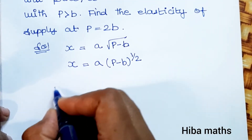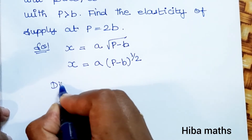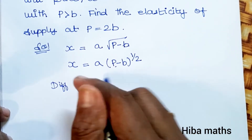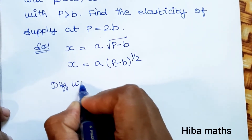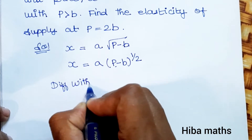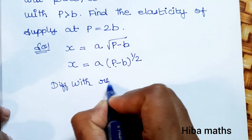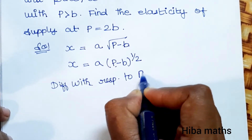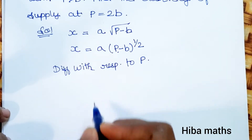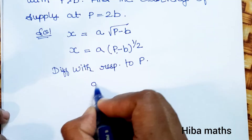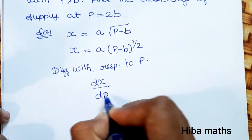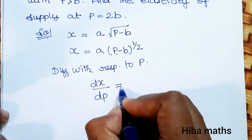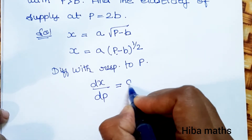We differentiate with respect to p. The right-hand side is given by a root of p minus b, so differentiating with respect to p gives dx by dp.